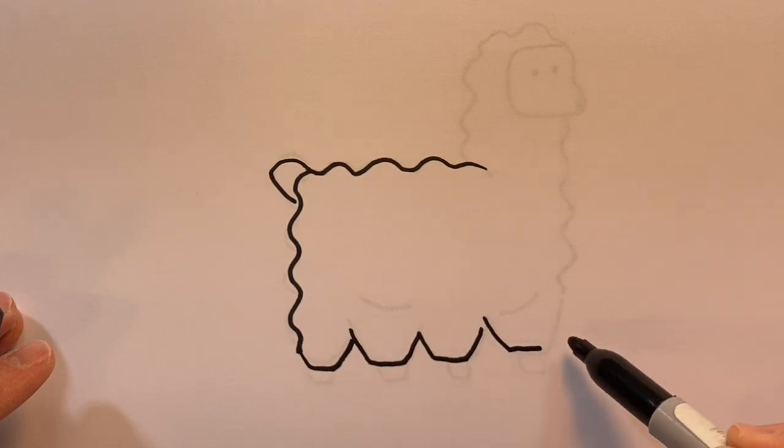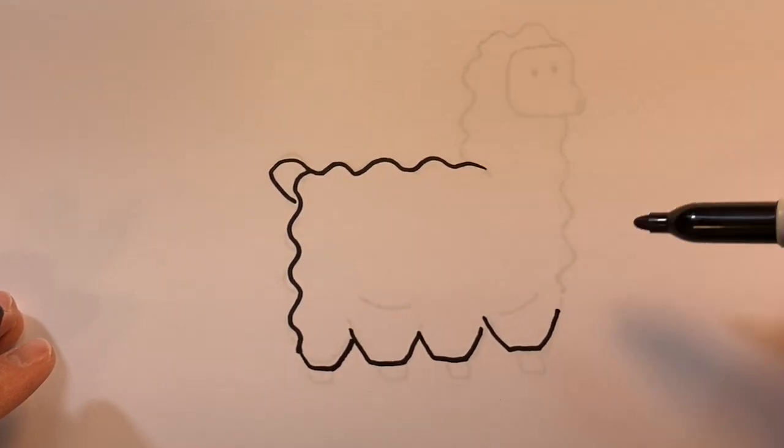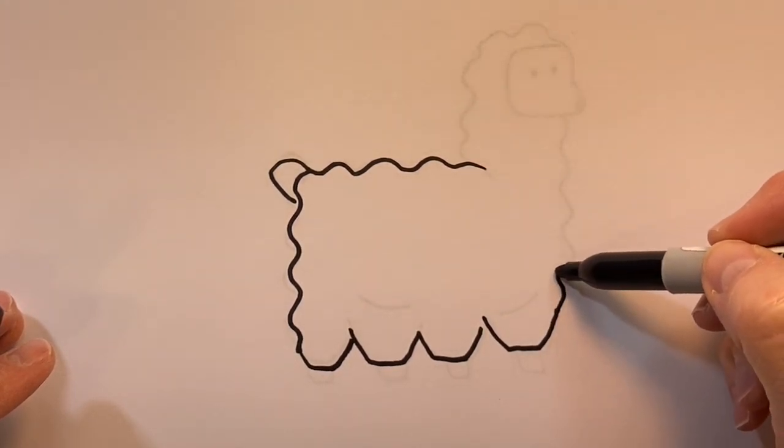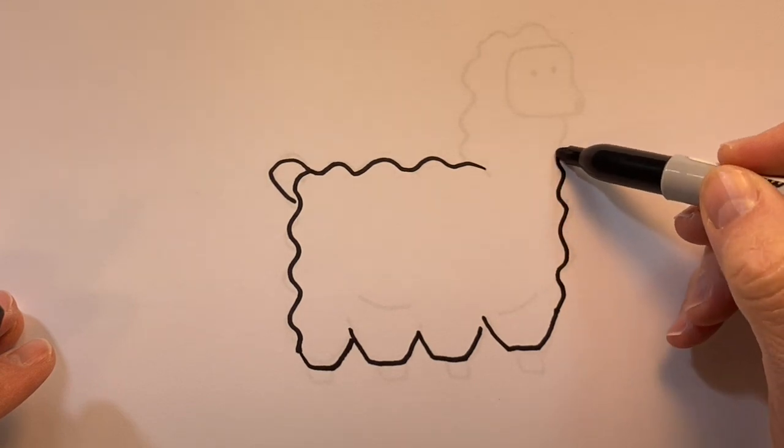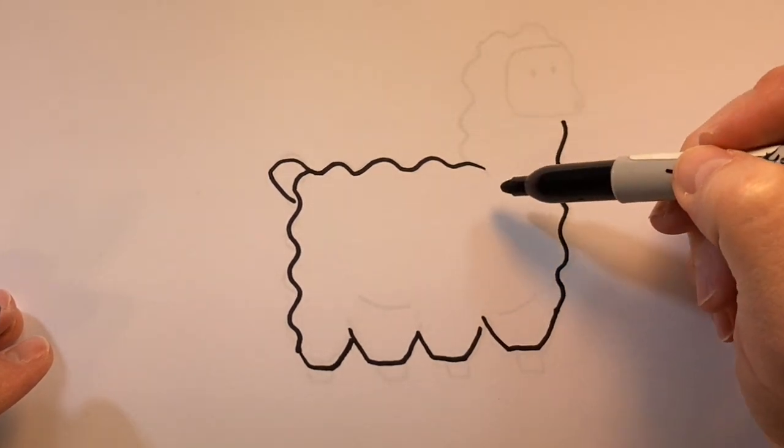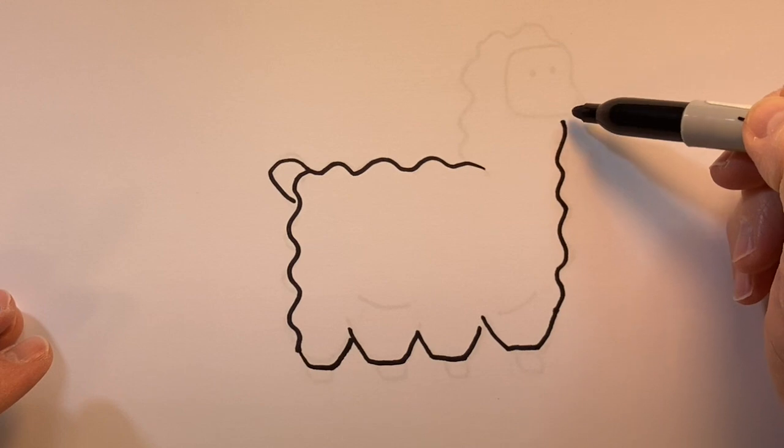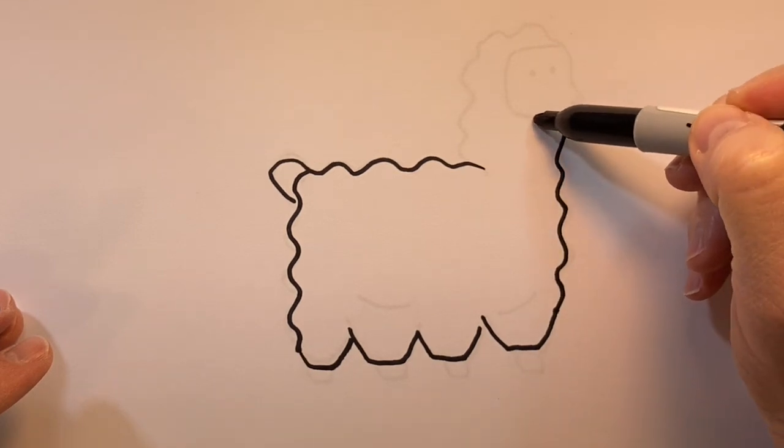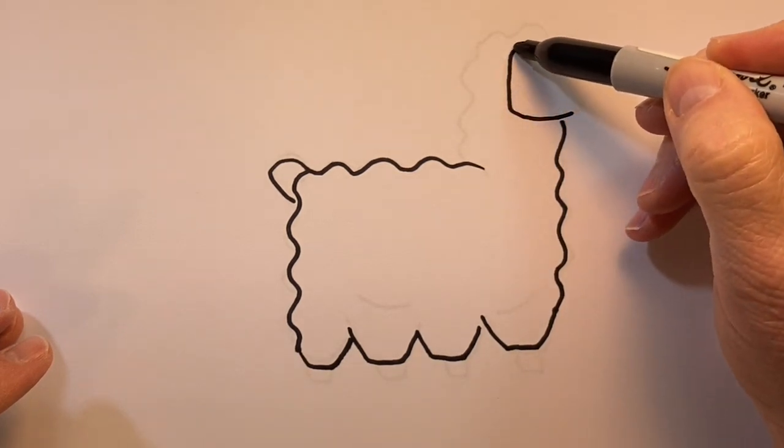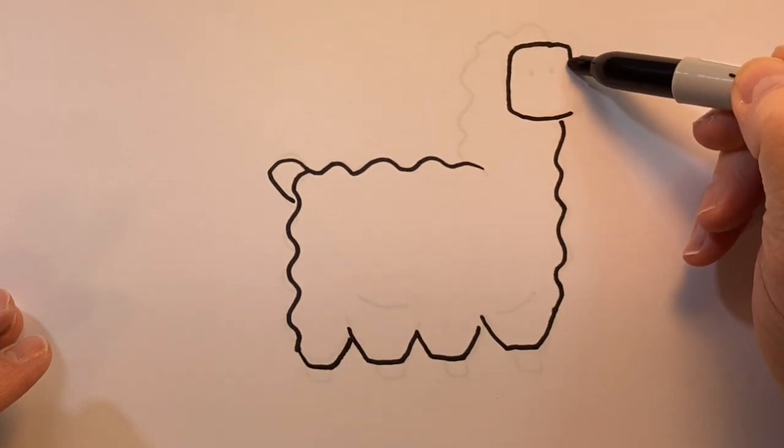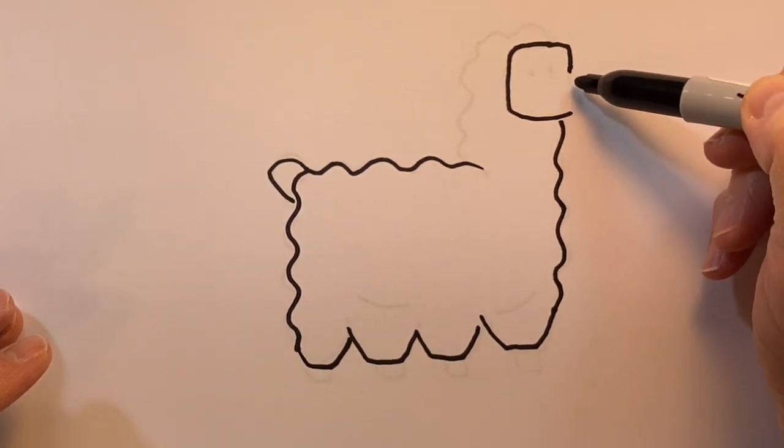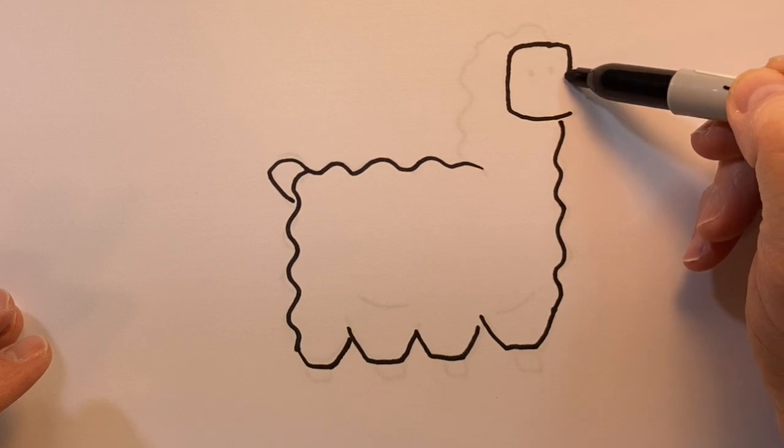We'll create four of those legs, then bring the other side of the llama up with another wavy line. Right where that ends, I'm going to form the face of the llama with an almost square shape, leaving a gap.